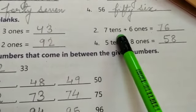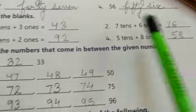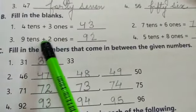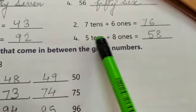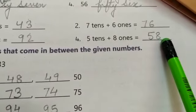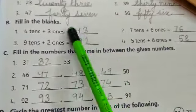Sums number 2: 7 tens 6 ones, 76. 3: 9 tens 2 ones, 92. 4: 5 tens 8 ones, 58. So we have written the numbers.